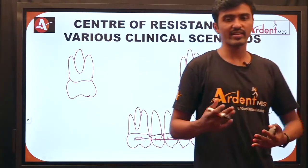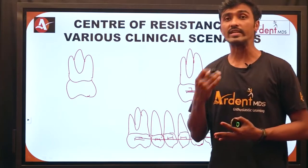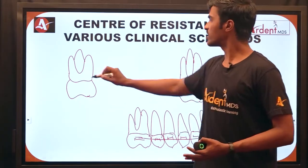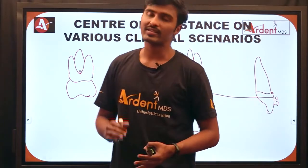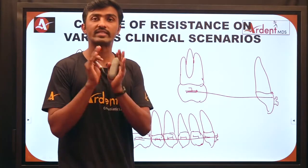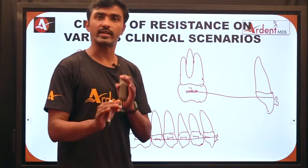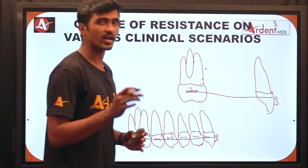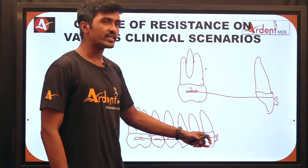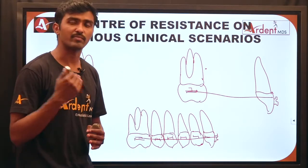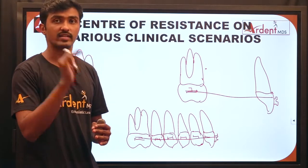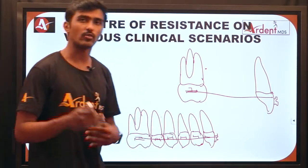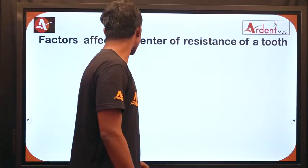There are different locations of center of resistance for different clinical scenarios. For a molar not connected to any arch, the center of resistance is near the furcation area. In bypass mechanics — where the molar is connected only to central and lateral incisors without including premolars — the center of resistance is located between the second premolar and first molar. For a full arch mechanism with brackets and wires on the complete dentition, the center of resistance is located between the roots of the premolar teeth.